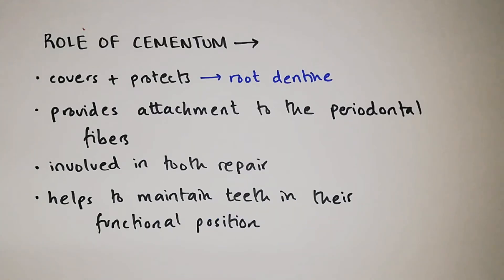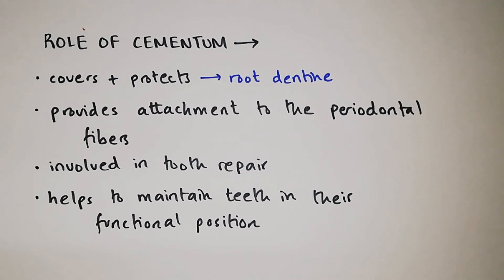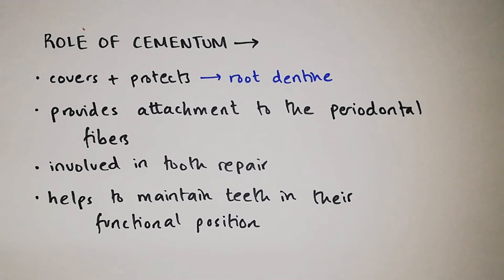The role of cementum is as follows: cementum covers and protects the root dentine, it covers the opening of the dental tubules, it provides attachment to the periodontal fibers, it is involved in tooth repair, and it helps to maintain teeth in their functional position.